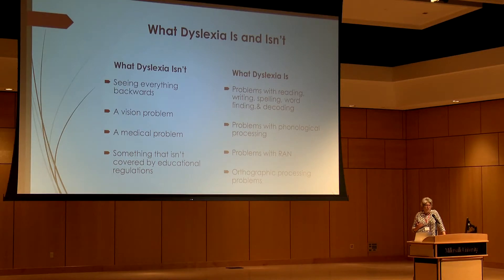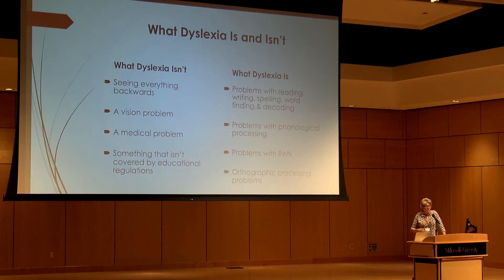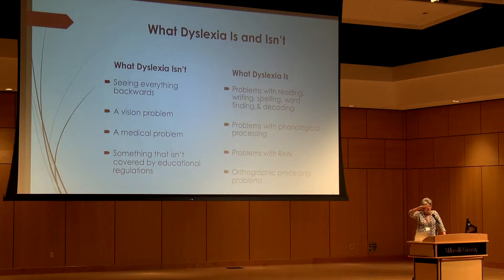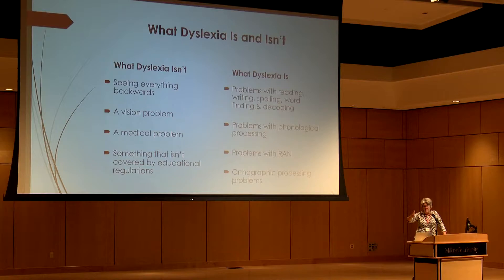Another term is orthographic processing. Orthographic means symbol — it doesn't mean you see everything backwards. It means you can have unstable perception of symbols, so you get your B's and D's and P's and Q's mixed up. We look at these processes involved with reading and spelling to figure out where they are breaking down. Because if we know the ones that are in trouble, we should know what the fix is.